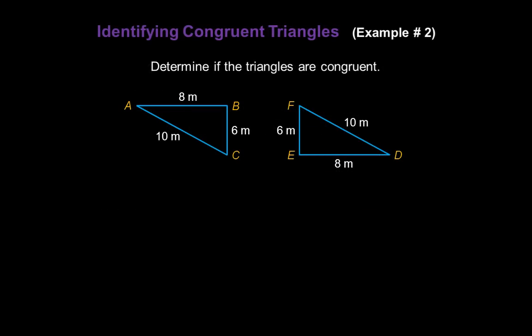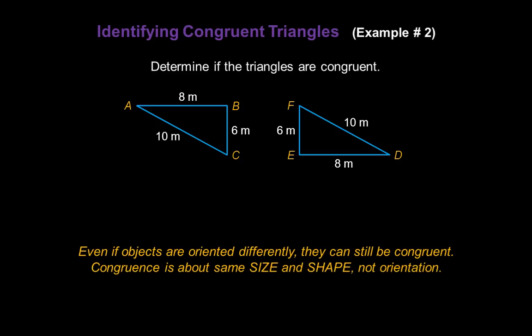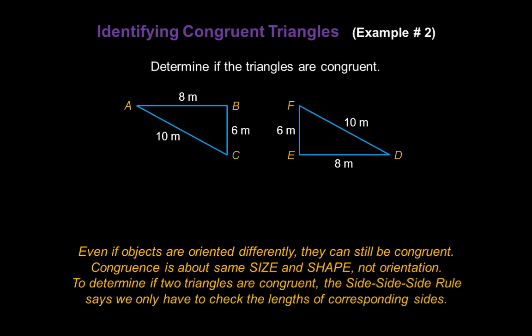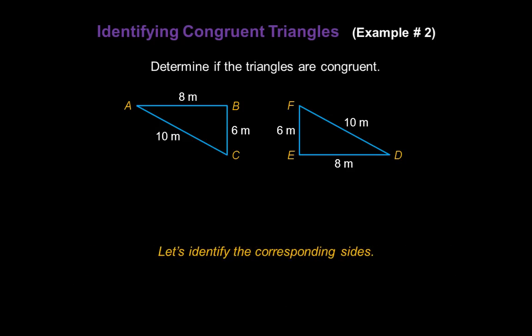Let's determine if these two triangles are congruent. Even if objects are oriented differently, as these two are, they can still be congruent. Congruent is about the same size and shape, not about their orientation. To determine if two triangles are congruent, we can use the side-side-side rule. It says we only have to check the lengths of corresponding sides. So let's go ahead and identify the corresponding sides on these two triangles.